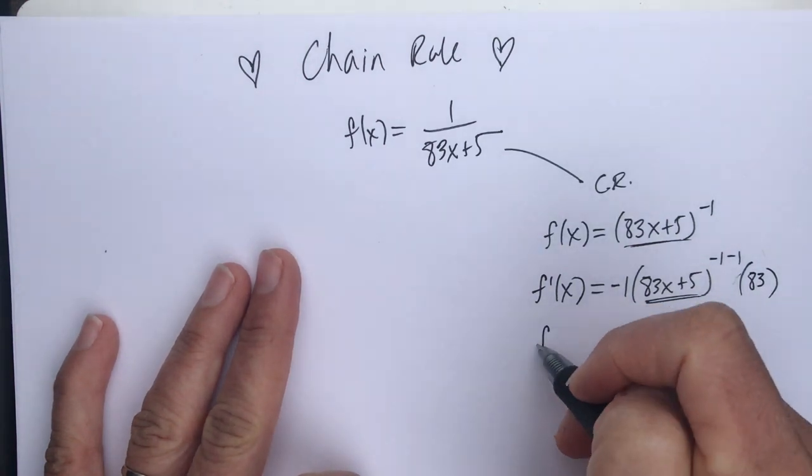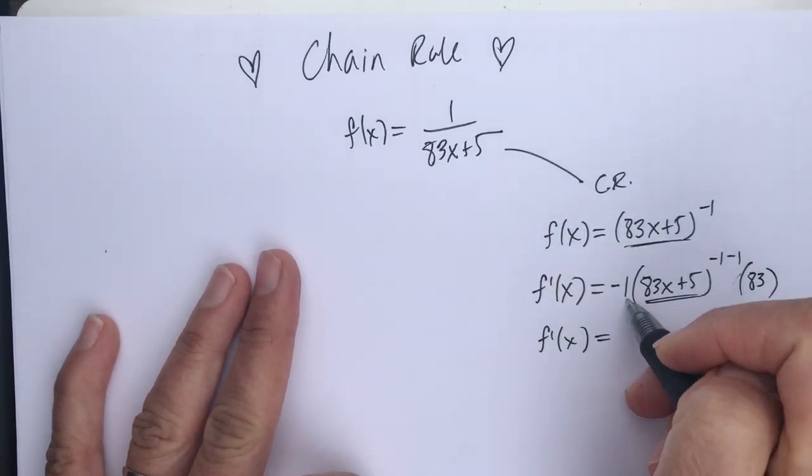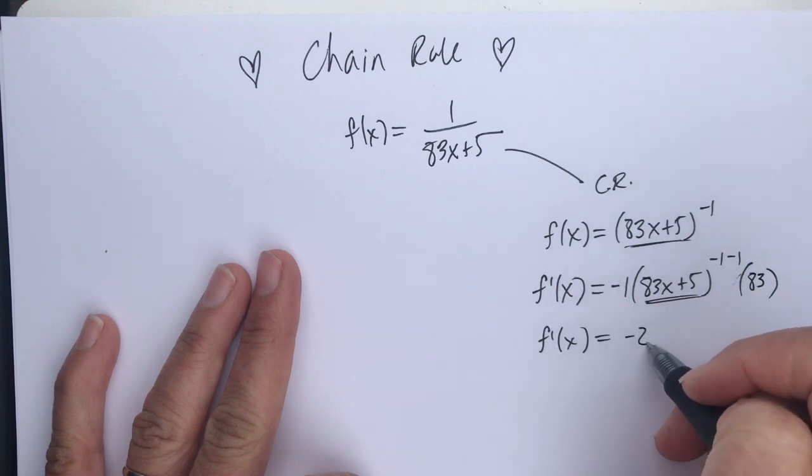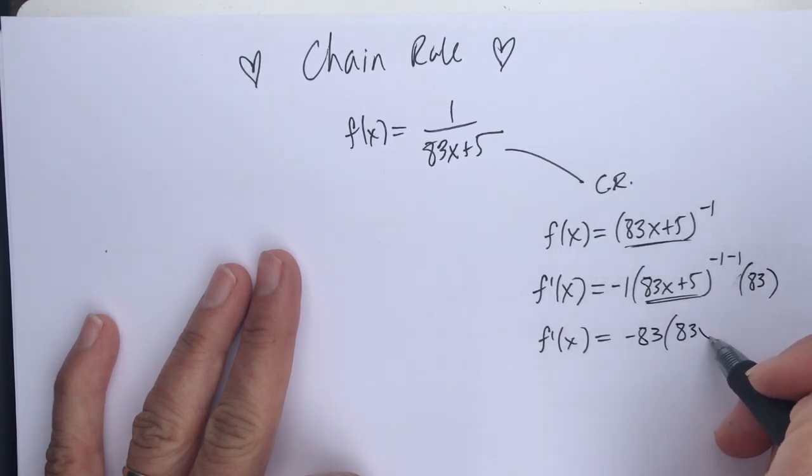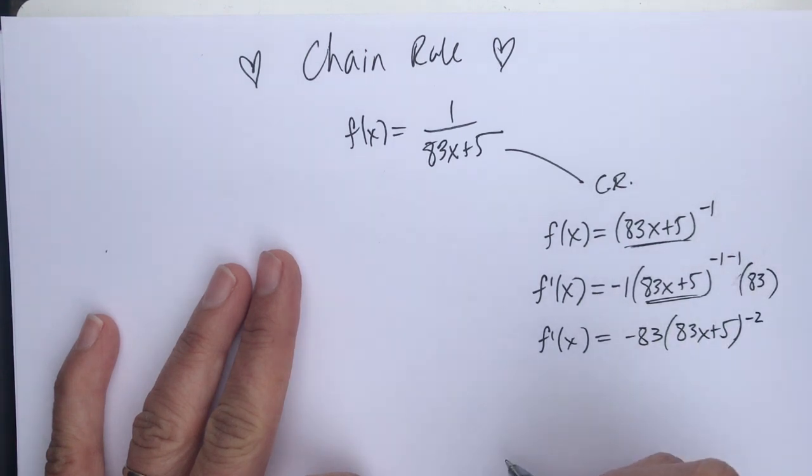Tie it all together, clean it up. I can do my negative 1 times the 83, so that's negative 83 times 83x plus 5 to the negative 1 minus 1 power, which is the negative 2nd power.